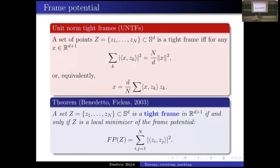Lots of other problems, such as the frame energy, also make sense as problems for energy integrals about measures rather than specific point configurations. In response to a question: you can say that as n goes to infinity you have weak-star convergence, but that doesn't give quantitative estimates. There are also ways to compare the discrete energy and the optimal continuous energy through various formulas.